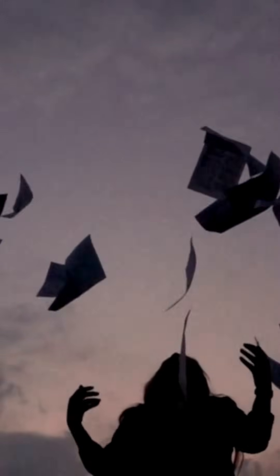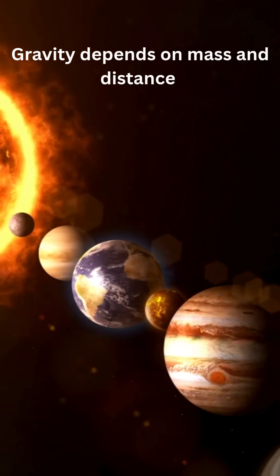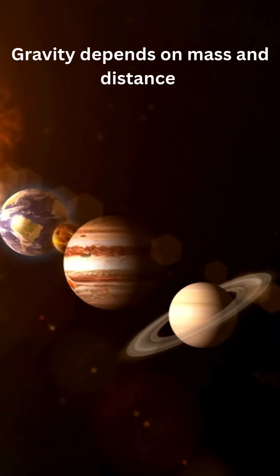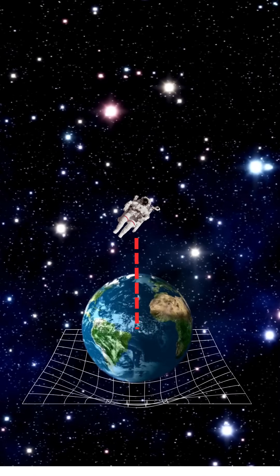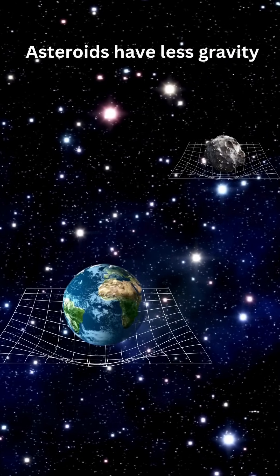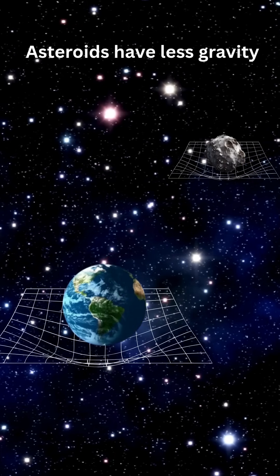Gravity holds us down on Earth, but it's not the same everywhere. It depends on two things: the mass of the object and how far you are from its center. Asteroids, being much smaller than planets, have a lot less gravity.